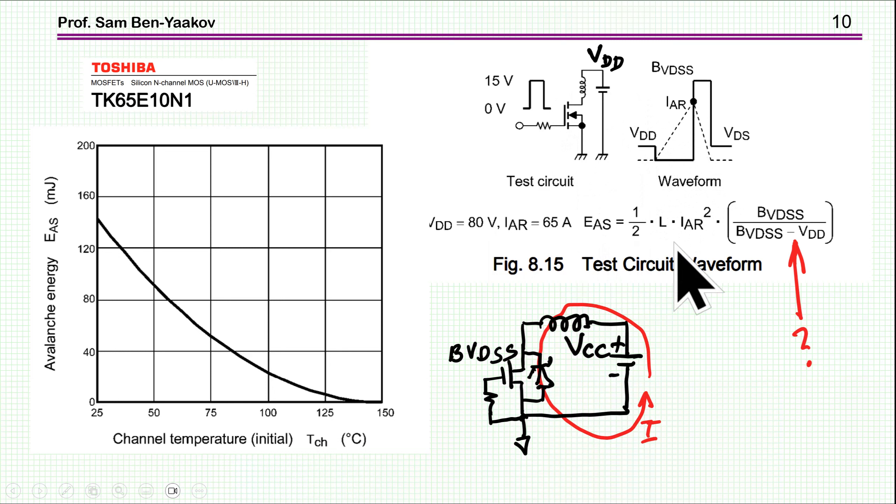They give this equation for the energy absorbed in such a setup. It is half Li squared, the initial energy of the inductor, times BVDSS over BVDSS minus VDD. At first glance, this is very strange. If the breakdown voltage is close to VDD, this approaches zero, then the amount of energy absorbed will be very large. Try to figure out why is this so. It's kind of counterintuitive.